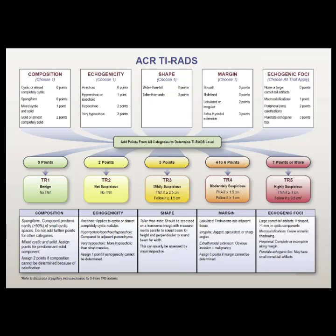Ultrasound of the thyroid is often ordered due to an enlarged thyroid or goiter, palpable nodules by a clinician, abnormal blood work, or follow-up to known nodules. Adenomas and colloid cysts are the most common benign findings in the thyroid, while papillary cancer is the most common malignant finding. A fine needle aspiration is usually required to determine pathology of nodules seen by ultrasound. However, TI-RADS can help by calculating the malignancy risk of ultrasound findings.